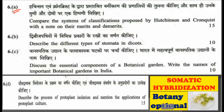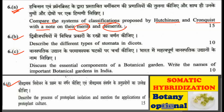The sixth question is divided into four parts: A, B, C, and D. The first sub-question asks you to compare the systems of classification proposed by Hutchinson and Cronquist, noting their merits and demerits, for which you will get 15 marks. The second sub-question asks you to describe the types of stomata found in dicots — a very easy question.